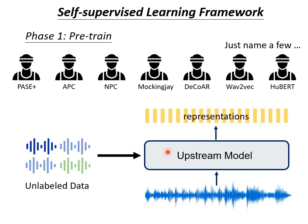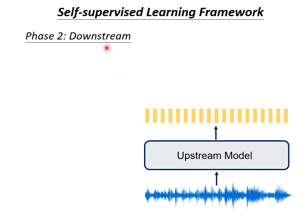In voice processing, this kind of upstream model — we already have several well-known models. It's like BERT for voice. In NLP we have BERT and GPT; in voice processing there is actually a series of upstream models ready to use. After the pre-training stage using lots of unlabeled data to train an upstream model, we can proceed to stage 2. In stage 2, you will have a specific problem to solve. For example, in voice applications, you may think of speech recognition — transferring audio signals to text. Of course, speech recognition is not the only voice-related task. We will introduce a variety of downstream tasks in the following part.